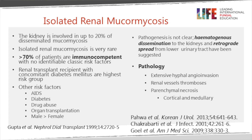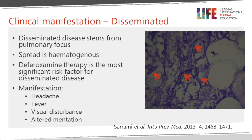Disseminated disease usually spreads from a pulmonary focus hematogenously. Key risk factors include deferioxamine therapy and intravenous drug abuse. Patients can present with cerebral disease, cutaneous lesions, or other organ involvement. It's often diagnosed as a surprise on histology, though in a very ill patient with multiple pulmonary shadows in the context of deferioxamine therapy, mucormycosis would be a key differential diagnosis.